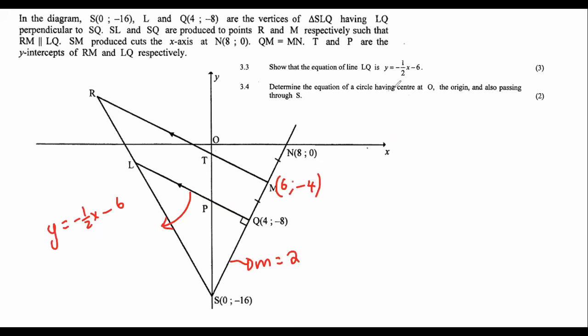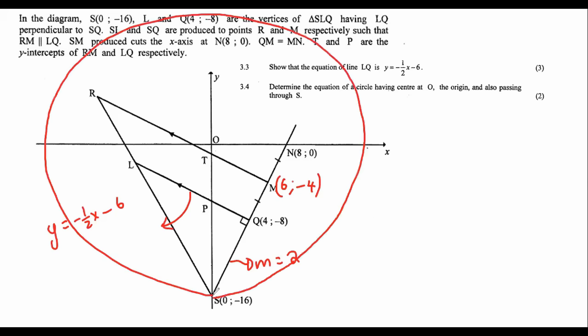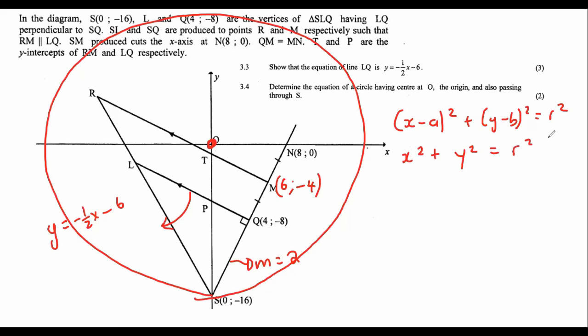Then they say determine the equation of a circle having a center at O and also passing through S. We know that the normal circle equation is (x − a)² + (y − b)² = r², but the center is the origin, so a and b are zero. That's just going to give us x² + y² = r².